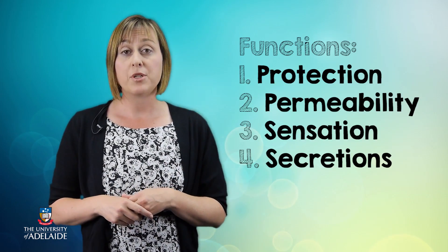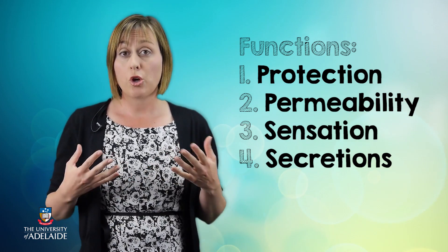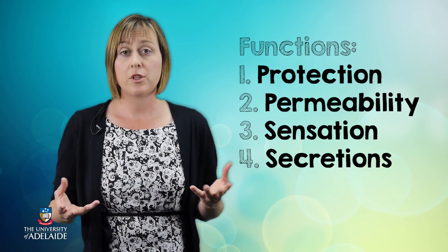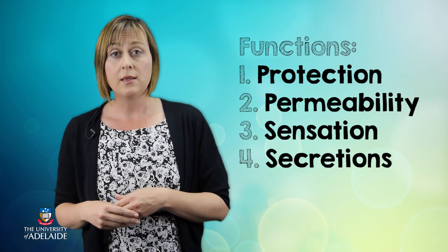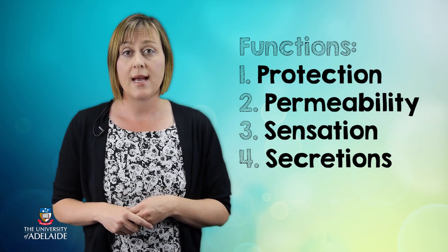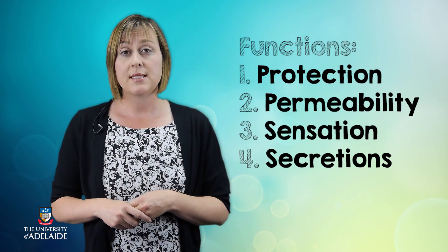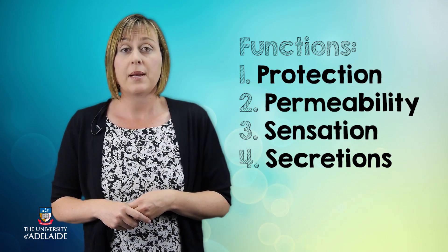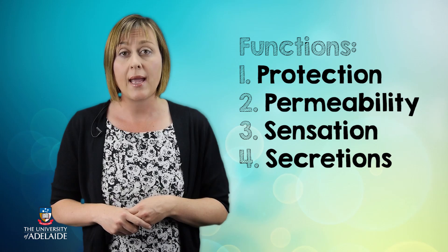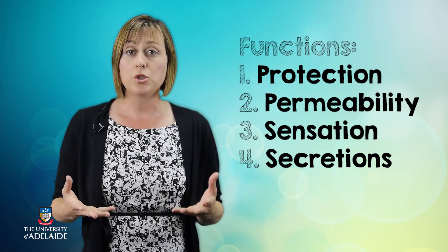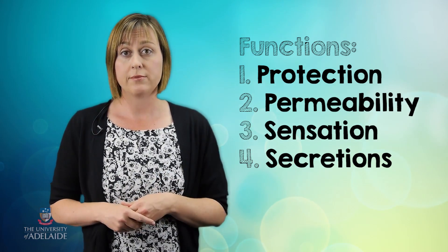In addition, although there are many different types of epithelial tissue, they have the same basic four functions. They are to provide protection for the body, to control permeability — regulating what comes in and what stays out — to provide us with sensation to enable us to detect temperature and pain, and also to produce secretions for the body.